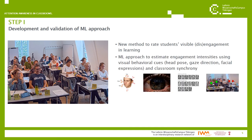We then developed a machine learning approach to estimate engagement intensities in students by using visual behavioral cues — in our case head pose, gaze direction, and facial expressions — and also classroom synchrony. This means we used an indication for whether two neighboring students looked into the same direction or not.